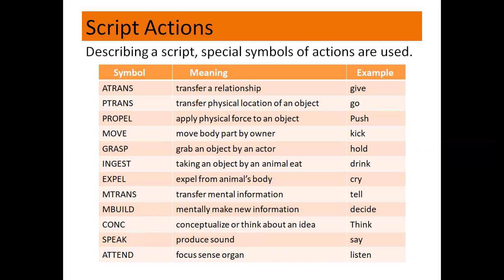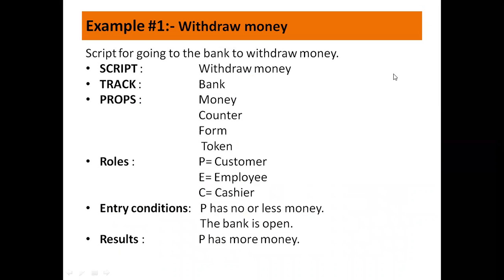The concept will be clearer with examples. The first example is writing a script to withdraw money from a bank. The script title is 'withdraw money' and the track is 'bank.' The props are money, counter, form, and token — because to withdraw money you go to the counter, fill up a form, and the cashier gives you a token. The roles are: customer (P), bank employee (E), and cashier (C). The entry condition is that the customer has no or less money and the bank is open. The result is that P has more money.